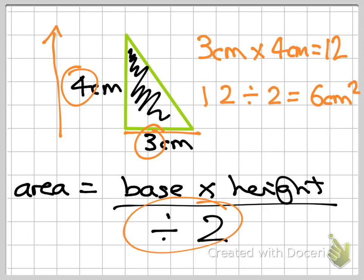And I can check this if I really wanted to by counting the squares in the middle. 1, 2, 3, 4, 5. And these little bits would make another one.